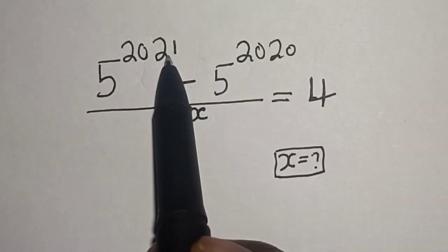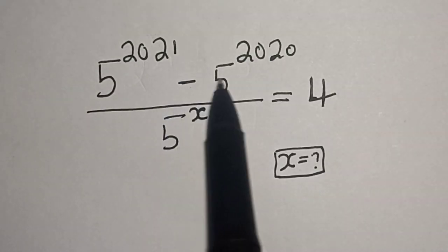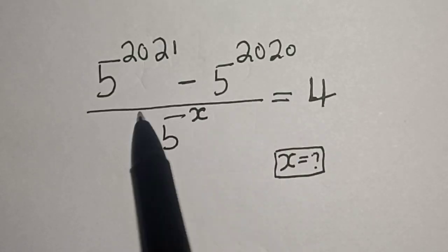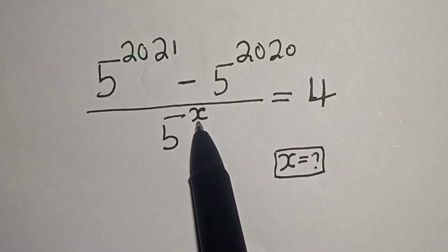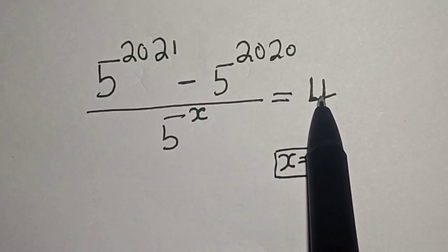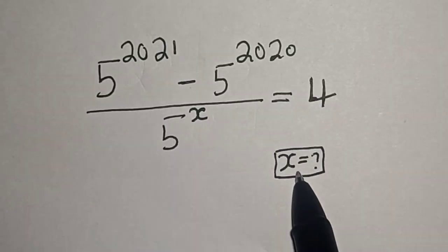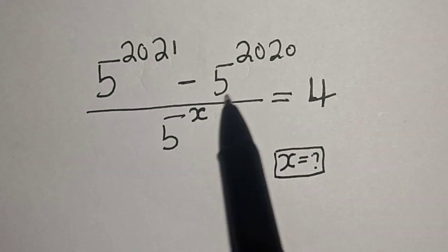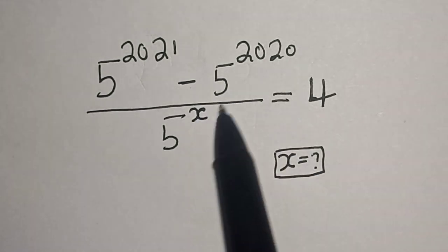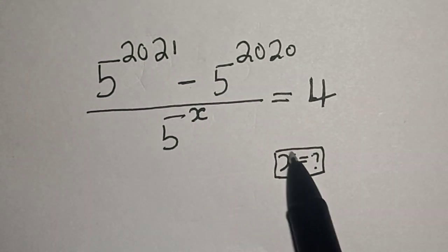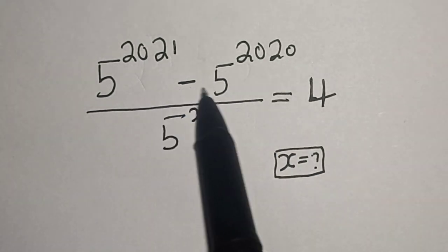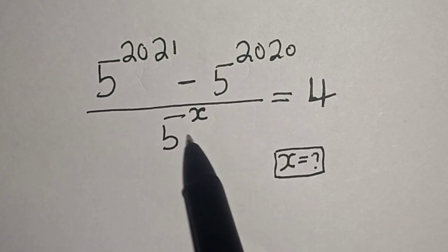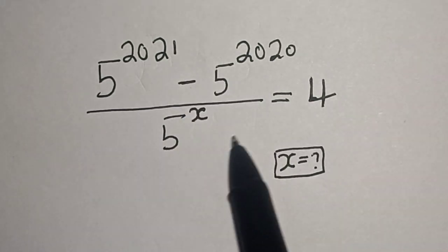5 raised to power 2021 minus 5 raised to power 2020 divided by 5 raised to power s is equal to 4. What is the value of s? Hi everyone, welcome to my class. In this class we want to find the value of s from this given equation.